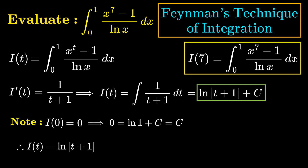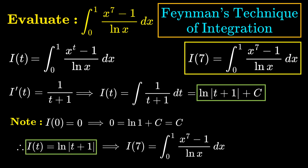Therefore I(t) = ln|t+1|. Not forgetting that our integral is I(7), when t = 7, the integral of (x^7 - 1) / ln(x) from 0 to 1 is just ln(8).